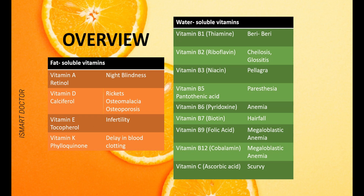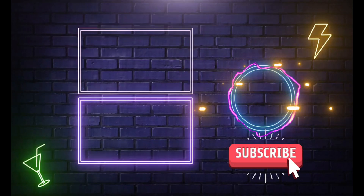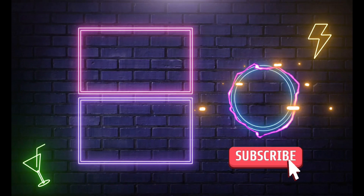Overview summary: Vitamin A — night blindness. Vitamin D — rickets, osteomalacia, osteoporosis. Vitamin E — infertility. Vitamin K — delay in blood clotting. B1 — beriberi. B2 — cheilosis, glossitis. B3 — pellagra. B5 — paresthesia. B6 — anemia. B7 — hair fall or alopecia, dermatitis. B9 and B12 — megaloblastic anemia. Vitamin C — scurvy.